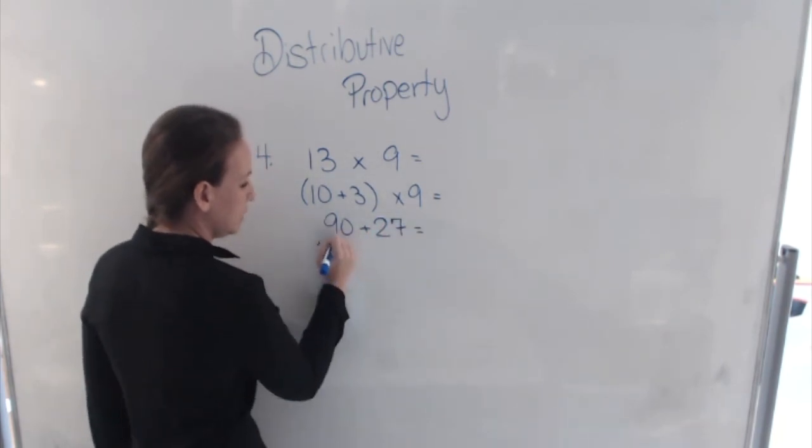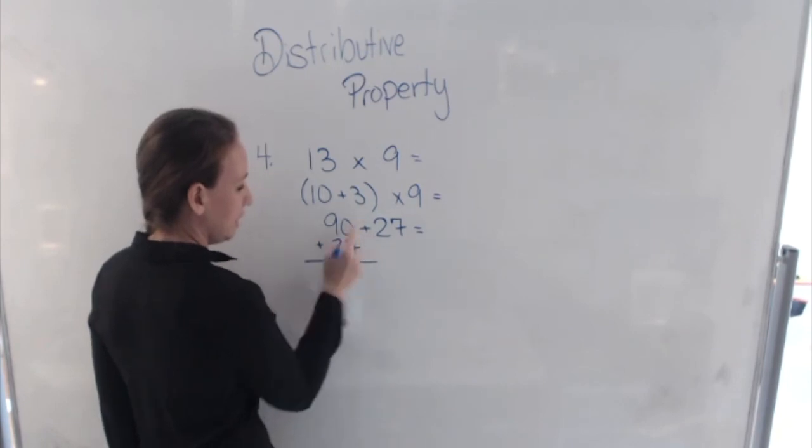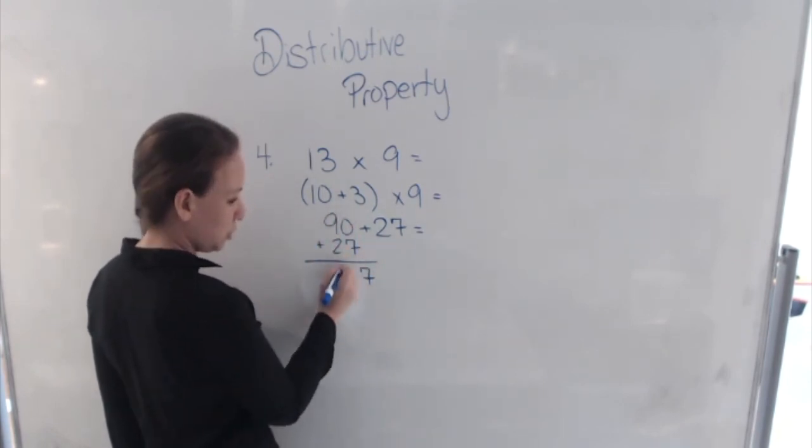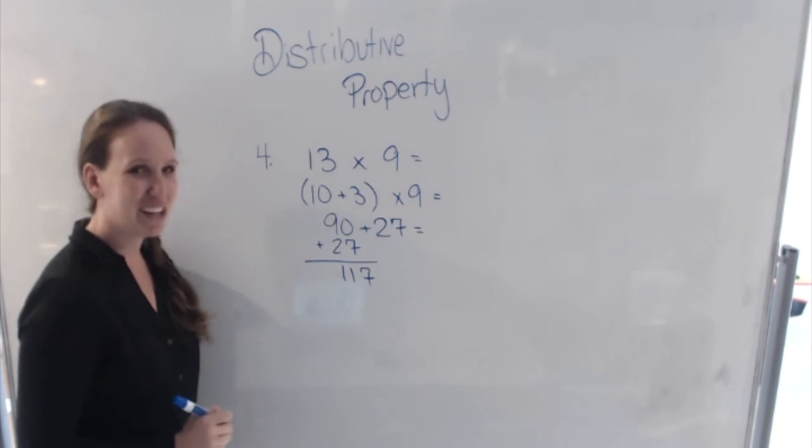And 90 plus 27 is 0, plus 7 is 7. And 9 plus 2 is 11. 117.